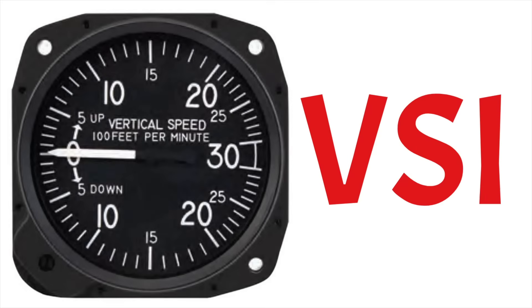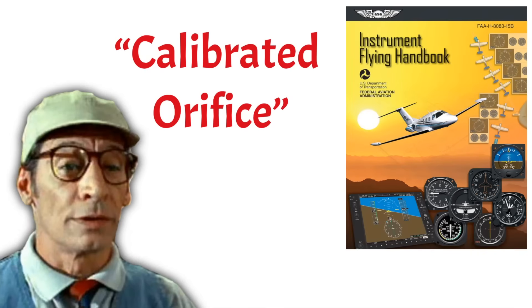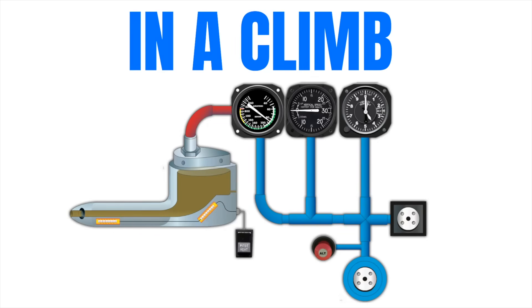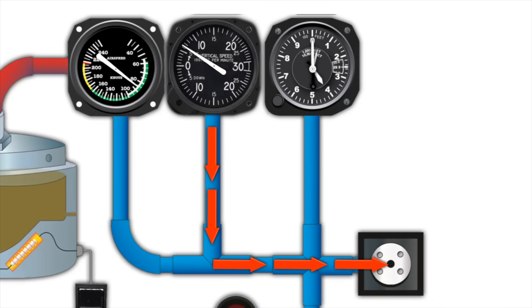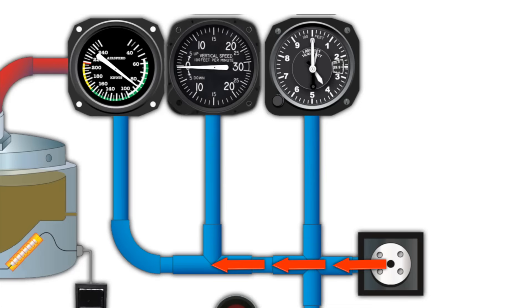The vertical speed indicator, or VSI, is an interesting device — basically a gauge with a hole in it. A very special hole. The Instrument Flying Handbook actually refers to this hole as a calibrated orifice. It's designed so that air can flow in and out of it to measure the rate at which air pressure is changing. When you climb, air pressure rushes out to compensate for lower air pressure, and the VSI gives you an approximate climb rate because air thickness drops 1 inch of mercury every 1,000 feet. When you descend, air rushes back in, allowing you to see your descent rate in feet per minute.